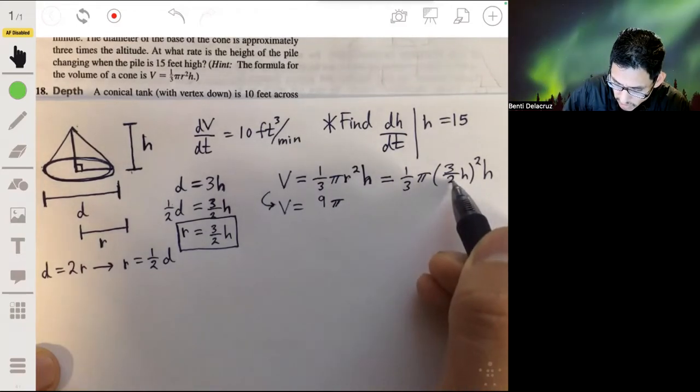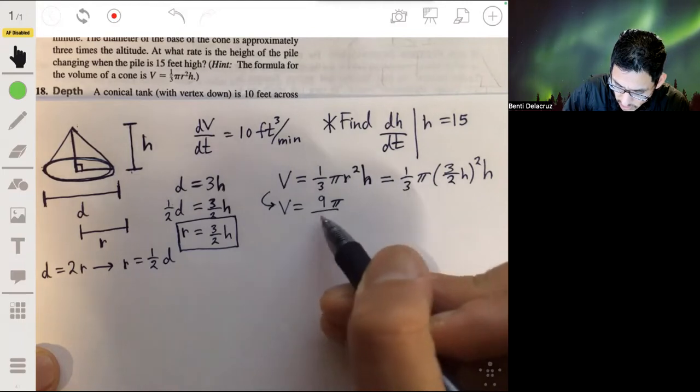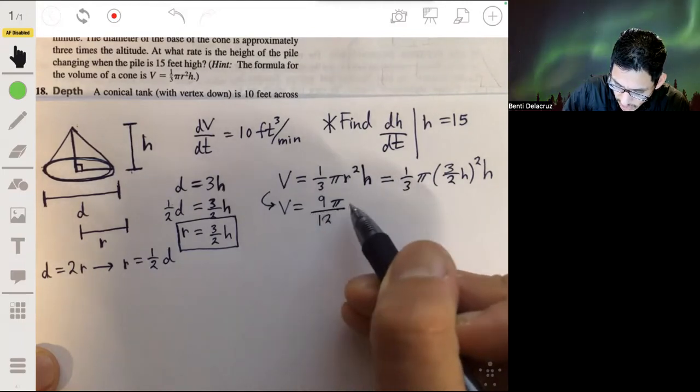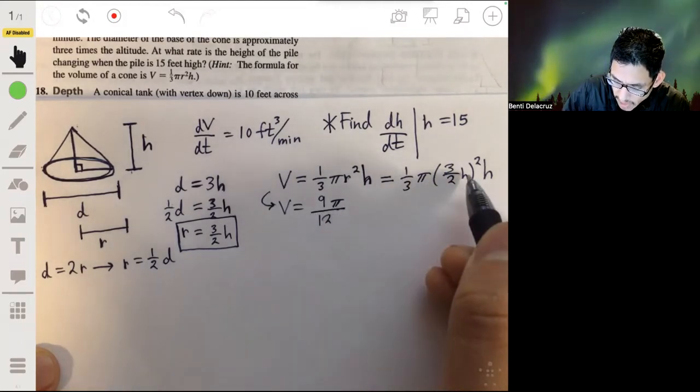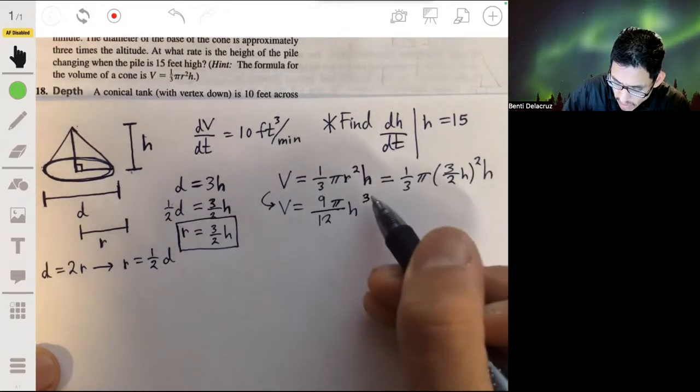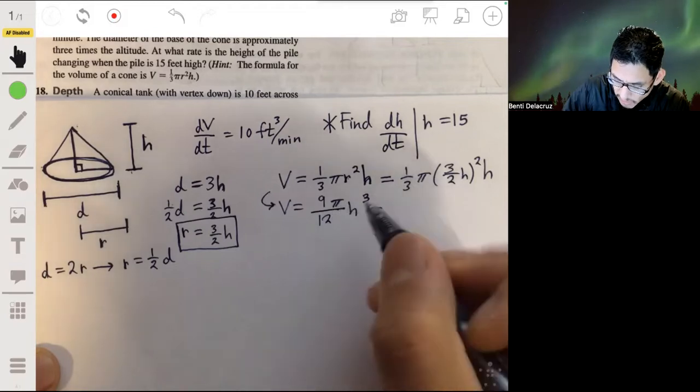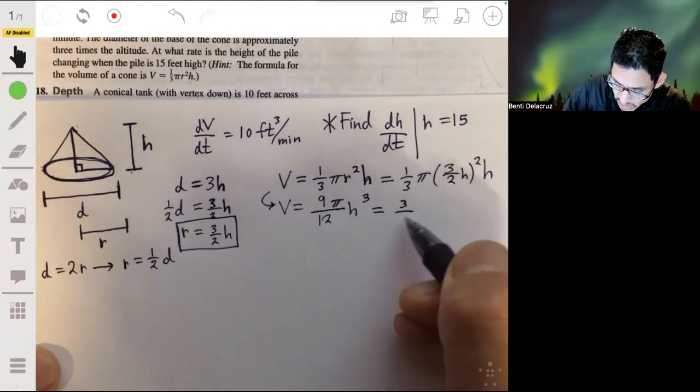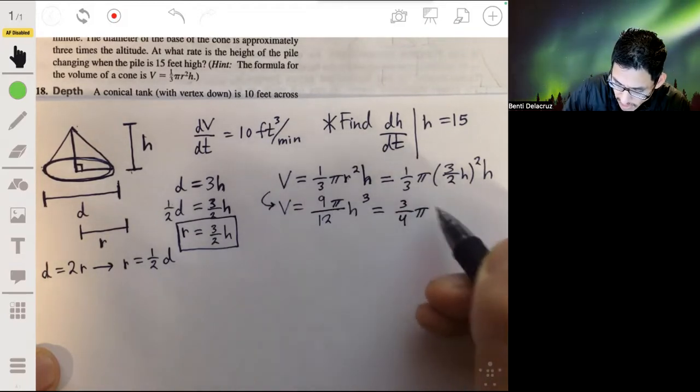The bottom is nine pi, and we have four times three, so let's make that over 12, and we have pi and h squared times h is h cubed. Simplifying it even more, the volume is three-fourths pi h cubed.